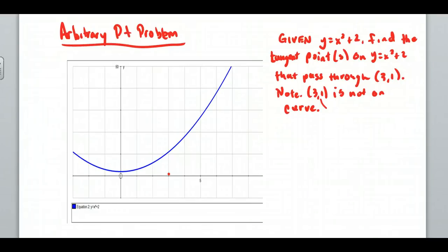This is an example of an arbitrary point problem, and I don't know if they're officially called arbitrary point problems or not, but that's what I call them. What it is is finding the equation or the points of tangency on a curve of a tangent line that passes through a point that's not on the curve.